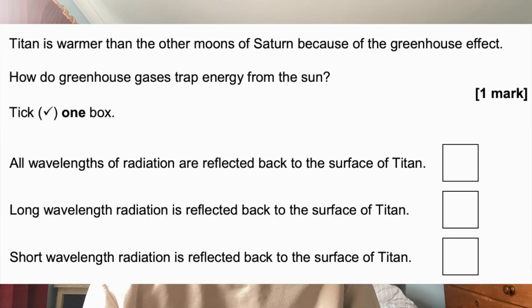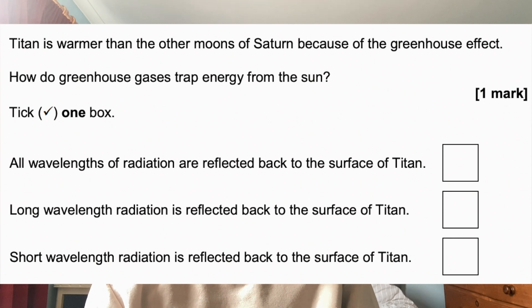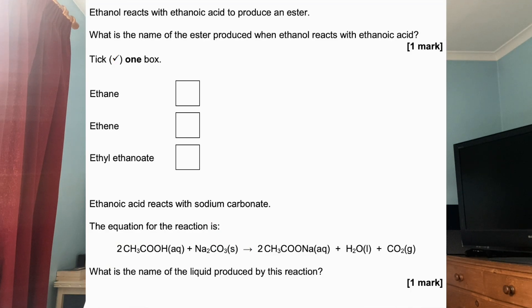Question three: Titan is warmer than other moons of Saturn because of the greenhouse effect. How do greenhouse gases trap energy from the sun? Options: all wavelengths of radiation are reflected back to the surface of Titan; long wavelength radiation is reflected back to the surface of Titan; or short wavelength radiation is reflected back to the surface of Titan. Question four: Ethanol reacts with ethanoic acid to produce an ester. What is the name of the ester produced? Options: ethane, ethene, or ethyl ethanoate.